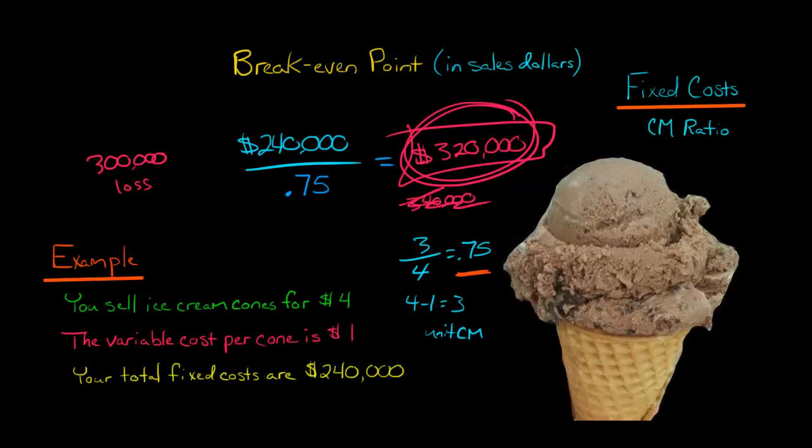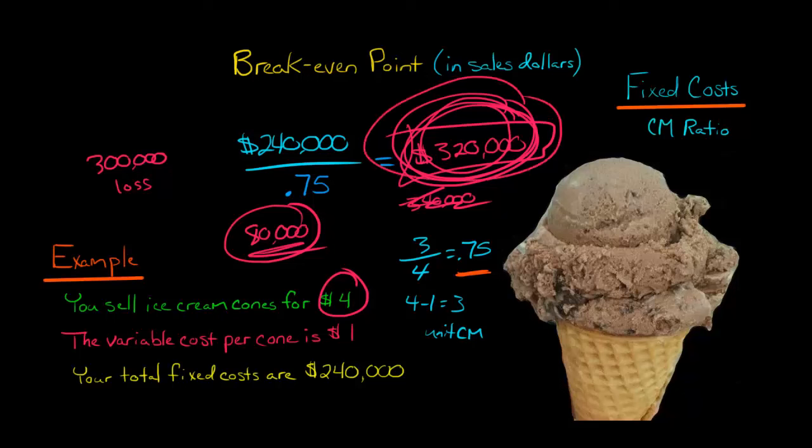Now, if you want to know, okay, well, let's say, so $320,000 in sales, how many ice cream cones is that? We take the $320,000 and we divide that by the selling price of $4, and that's 80,000 ice cream cones. So we've got to sell 80,000 ice cream cones, which would be $320,000 in sales revenue in order to break even.